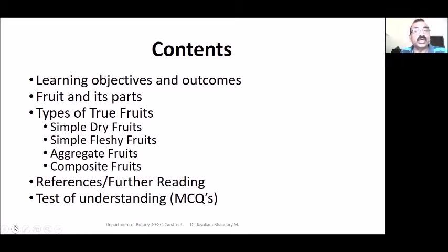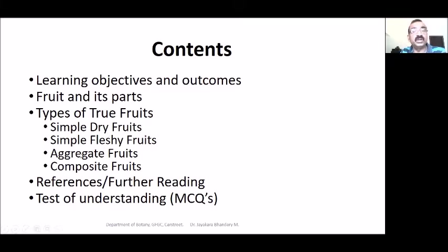Coming to types of fruits, you have different types like true fruits, then false fruits. There are simple dry fruits, simple fleshy fruits, then aggregate fruits, and composite fruits. These are the different types of fruits we will be studying.